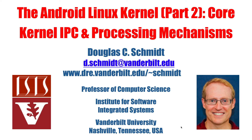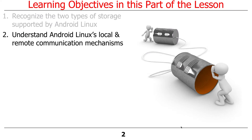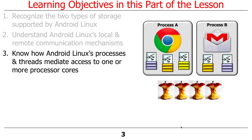The next topic is the core kernel interprocess communication and processing mechanisms that Linux provides, and Android Linux. We'll talk about Android Linux's local and remote communication mechanisms, and how Android Linux supports processes and threads, which are there to do a variety of things. For the purposes of this course, the most important thing is to mediate access to the underlying cores.